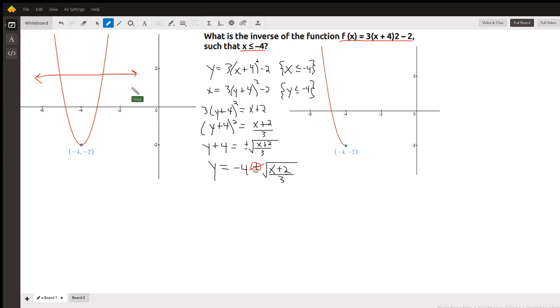By restricting the domain to x is less than or equal to negative 4, we get rid of this half of the parabola. And we have this picture right here, which is one-to-one, does pass the horizontal line test. So it will have an inverse function.